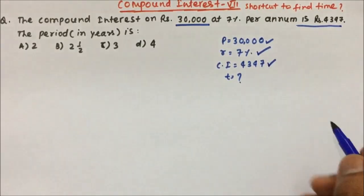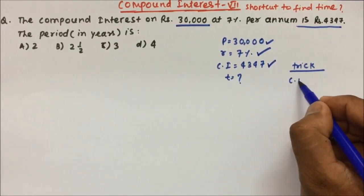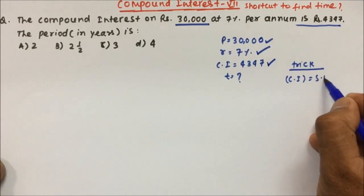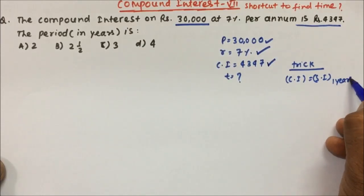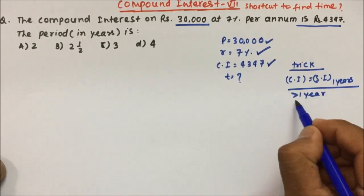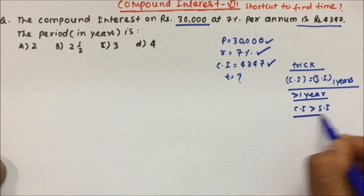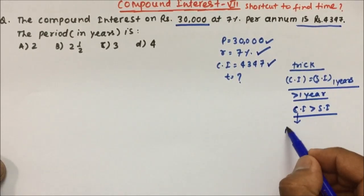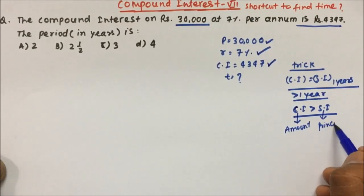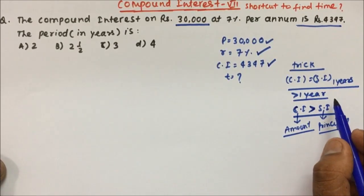The trick here is: as we know, compound interest and simple interest for one year will be the same. For more than one year, compound interest will always be greater than simple interest. Why? Because compound interest is always calculated on the amount, and simple interest is always calculated on the principal. This is the only reason compound interest will always be greater than simple interest for more than one year.